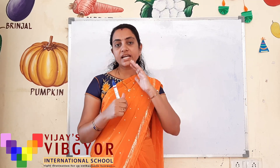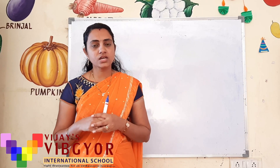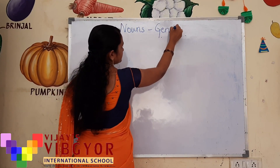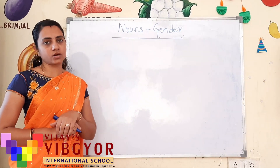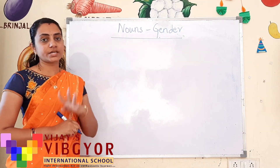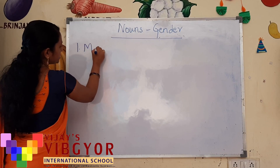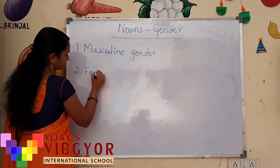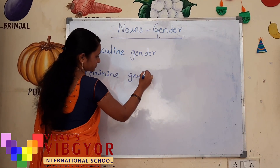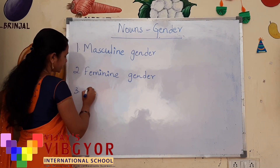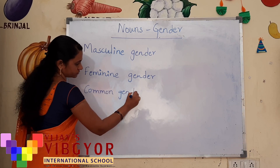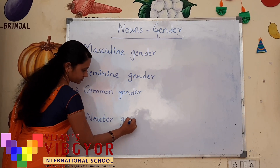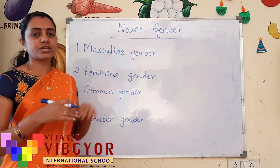In this class, let us try to get a deeper and more detailed explanation about classification of nouns based on their gender. According to the classification of nouns based on gender, we have four types: masculine gender, feminine gender, common gender, and neuter gender.